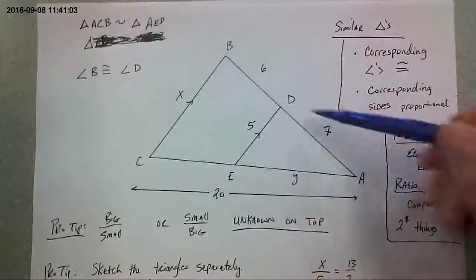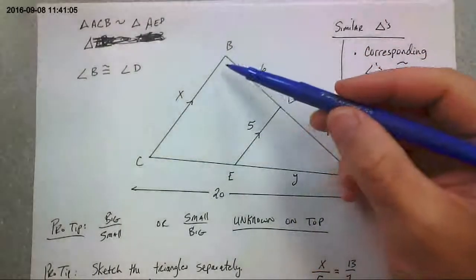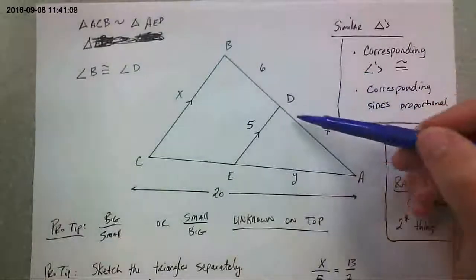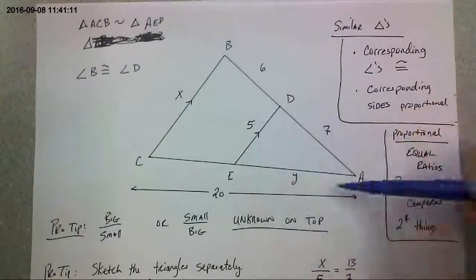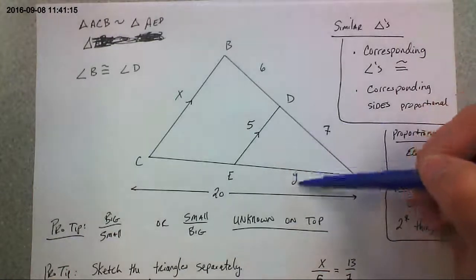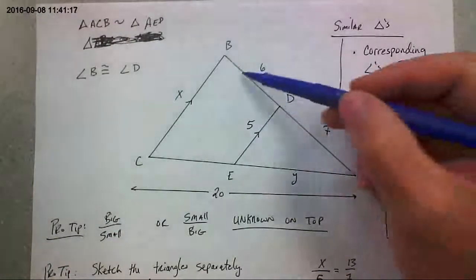Because if you look at the big triangle right here, A, B, C, opposite of the longest side, 20 is B. And look at the smaller triangle, right? A, D, E opposite of the longest side, which is Y is D. These two are corresponding.